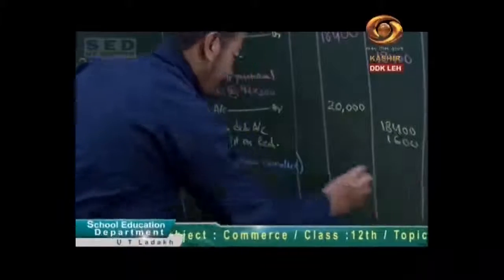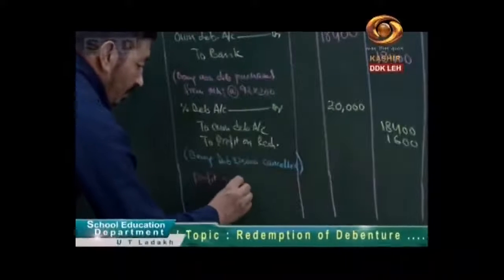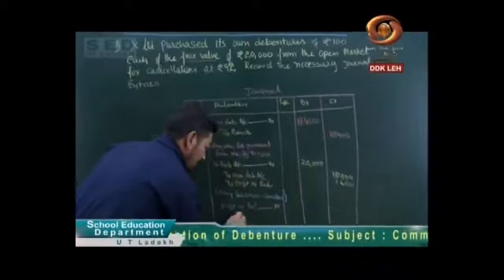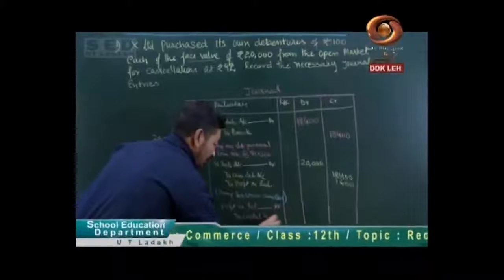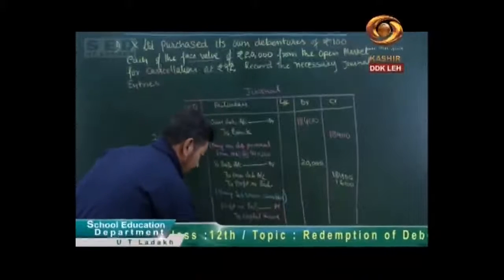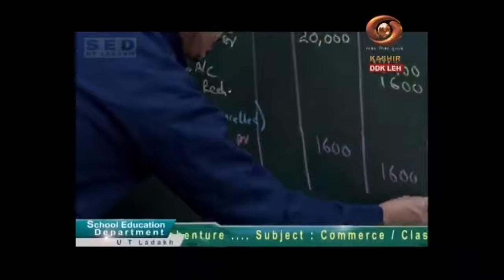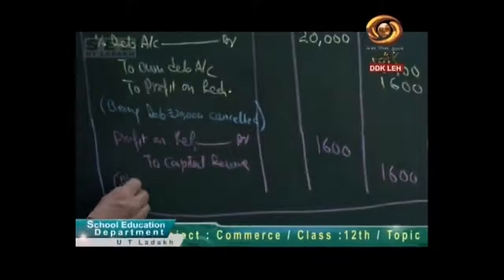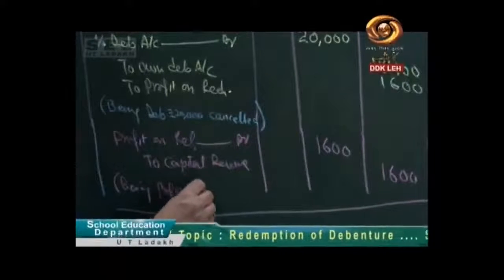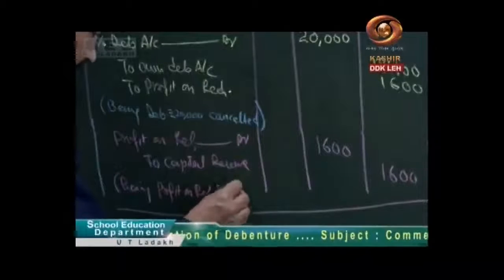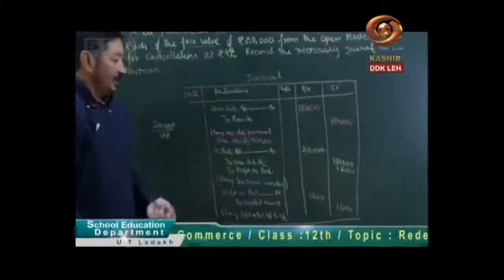The rest of our first question is finished. Now, profit on redemption — we will debit it to Capital Reserve. We will transfer it. This is our 1,600. Being profit on redemption transferred to capital reserve.